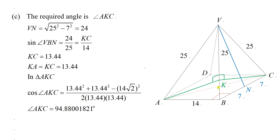You can use the obtuse angle triangle AKC with cosine formula. Cosine angle AKC equals 2 times (13.44 squared) plus (13.44 squared) minus (14 square root 2 squared), over 2 times (13.44 times 13.44). You find the final answer: angle AKC equals 94.88 degrees.